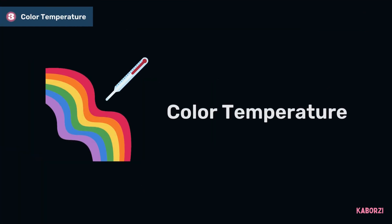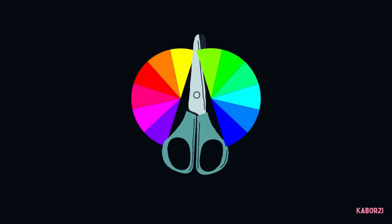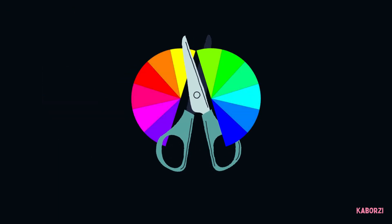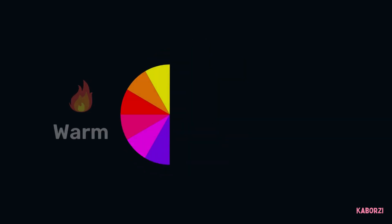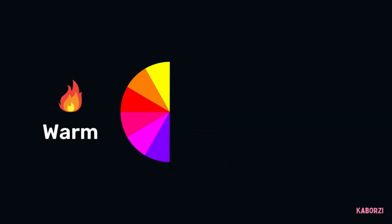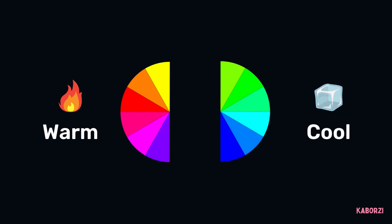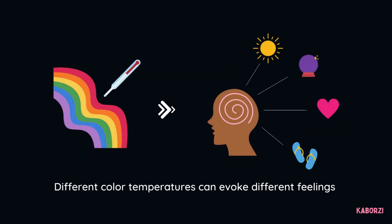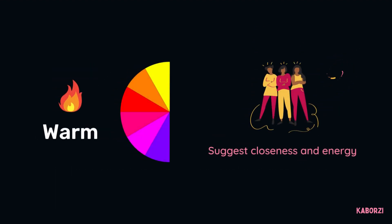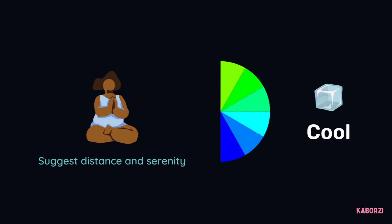Color Temperature: the color wheel can be divided in half by warm and cool colors. The colors on the red side of the wheel are considered warm, while the green side of the wheel is considered cool. According to color psychology, different color temperatures evoke different feelings — warm colors suggest a sense of closeness and energy, while cool colors are more associated with distance and serenity.